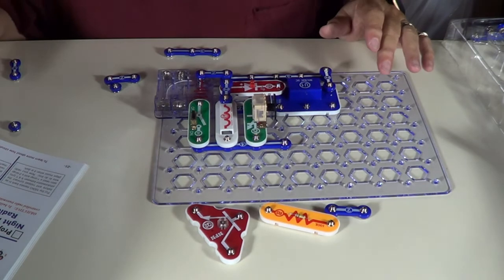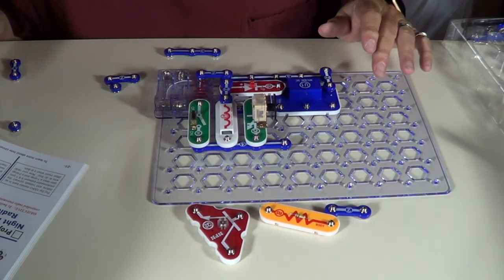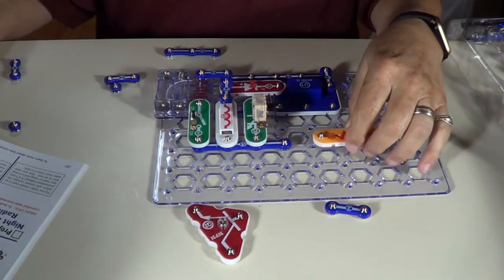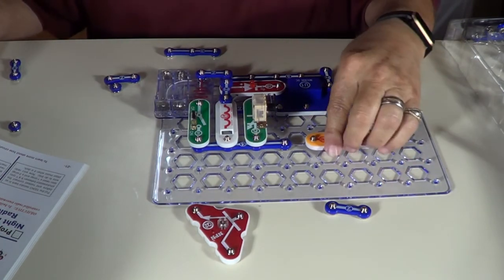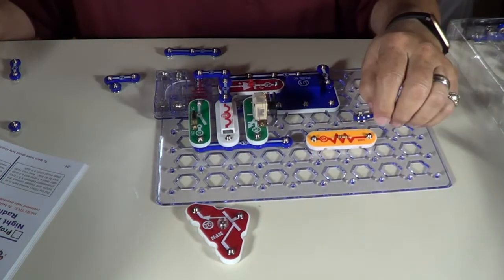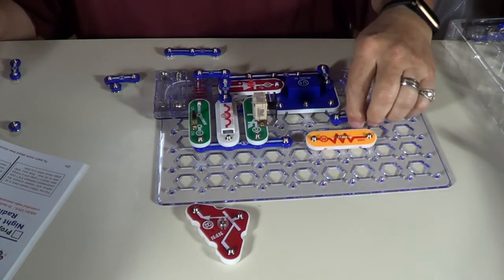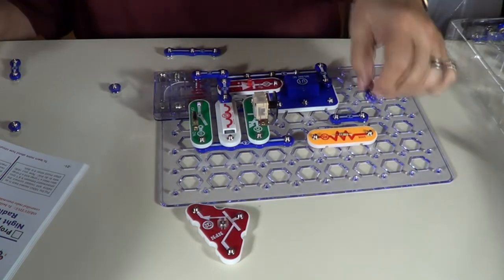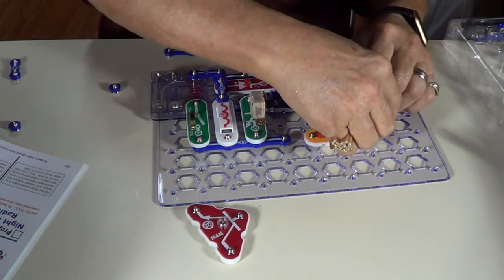We need a resistor R5 to go right there. We're going to need this to go right there. That 2-banger goes connecting those two.